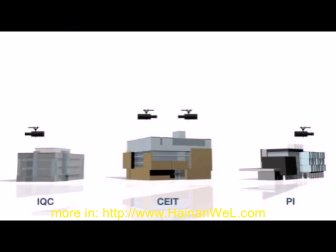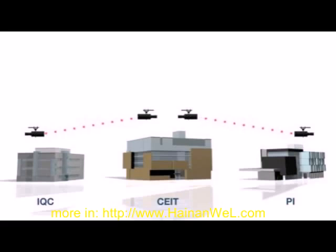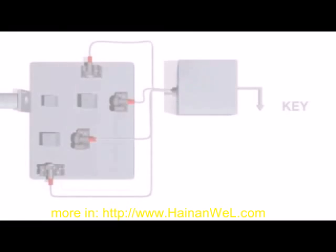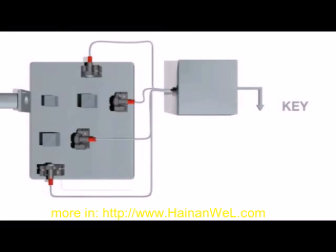The photons travel through free space from the source telescopes to identical telescopes located at the IQC headquarters and the PI building. For now, let's just focus on Alice's photons. After they are collected by the telescope, the photons are channeled into a receiver box.